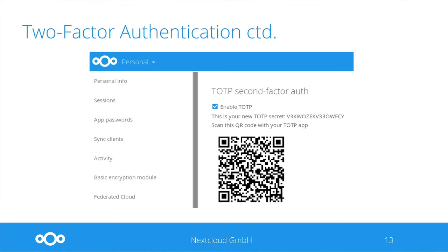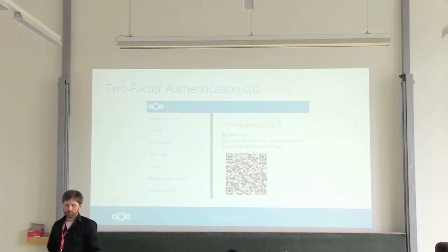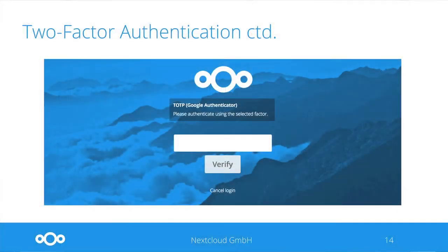After this app is enabled, for the time-based passwords example, you can go to your personal user settings and there'll be a point where you can enable TOTP. You can photograph the QR code or use the secret, provide it to your TOTP app on your smartphone for instance, and then after logging in with your normal password, you get an input field where you need to insert the code that is valid for a couple of seconds.